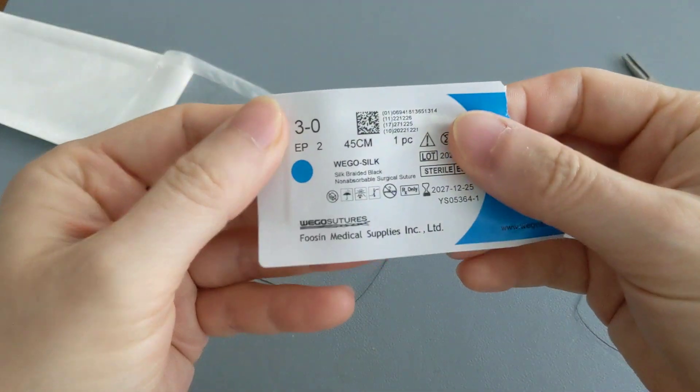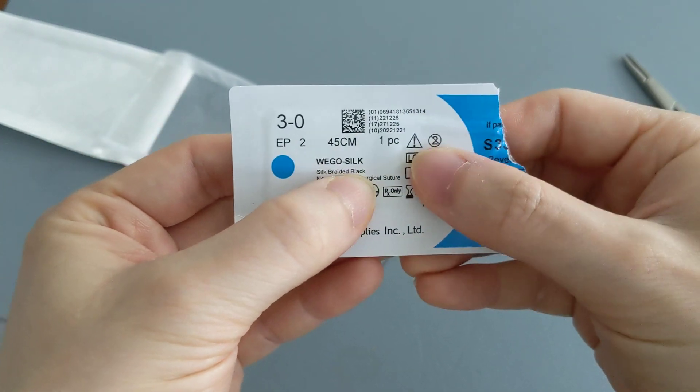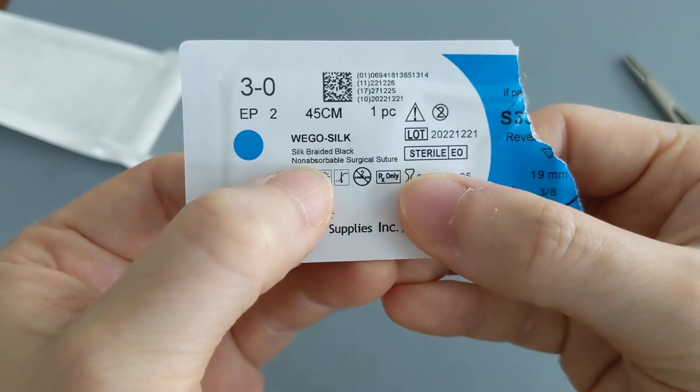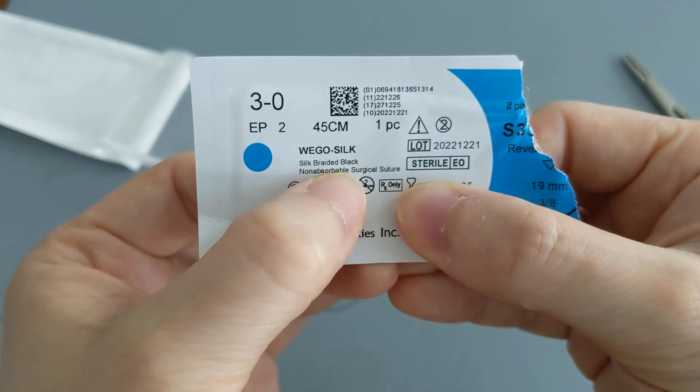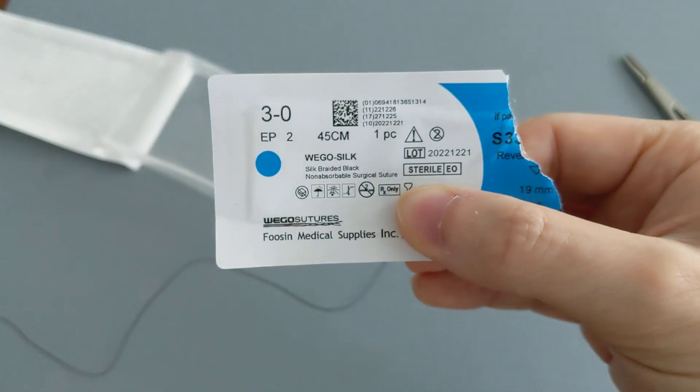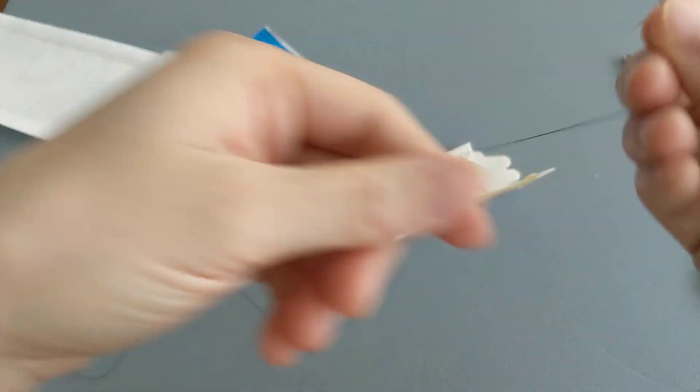See, it's a silk braided black, so these are silk stitches, and it says that they are non-absorbable surgical sutures. So non-absorbable means that it will not dissolve, and yeah, that's basically it.